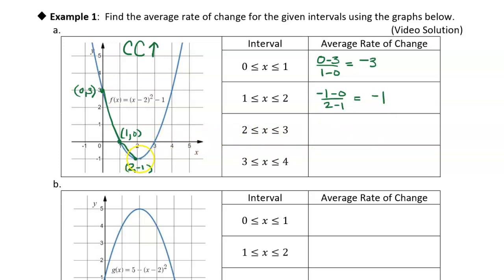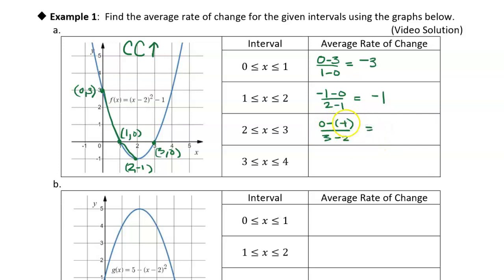For the interval from 2 to 3, this looks like the point (3, 0). The average rate of change is (0 − (−1)) / (3 − 2). Minus a negative is positive, so this is 1 over 1, which is 1.